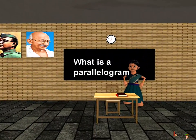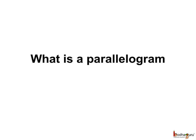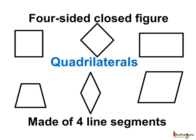Good morning children. Today we shall learn about a special type of quadrilateral which is a parallelogram. We know all four-sided closed figures made of line segments are quadrilaterals. Also, it is a type of polygon as each line segment intersects just two other line segments. So a quadrilateral is a type of polygon.